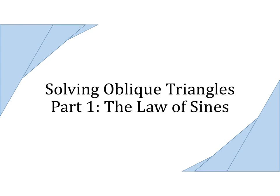We have seen how to solve triangles that are right triangles, but what happens if our triangles are not right triangles? Those triangles are called oblique triangles, and we have two tools to help us solve oblique triangles, namely the law of sines and the law of cosines.